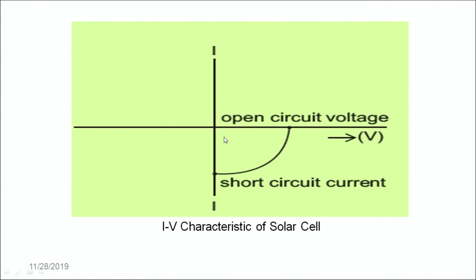In an open circuit, when light falls onto the solar cell, electrons move towards the n-end and holes move towards the p-side. Both sides collect a large number of electrons and holes, thereby generating an EMF. In the short circuit condition — when current is drawn from the circuit — a large amount of current flows. This represents the IV characteristic curve of the solar cell. In today's lecture, we talked about different kinds of diodes: the zener diode, the photodiodes, the light emitting diodes, and the solar cells. Thank you, learners.